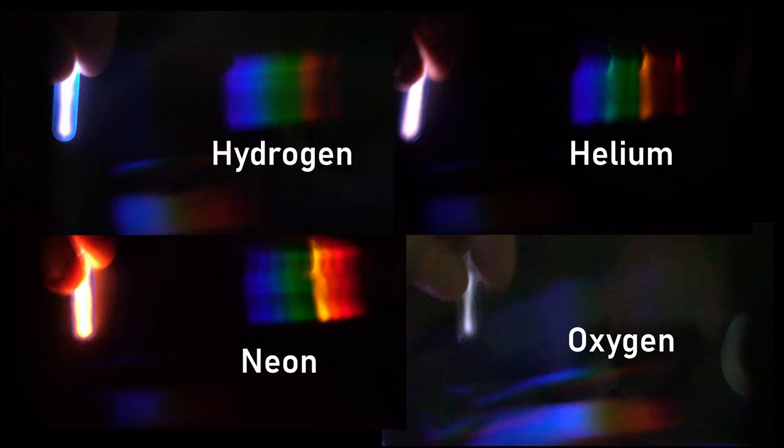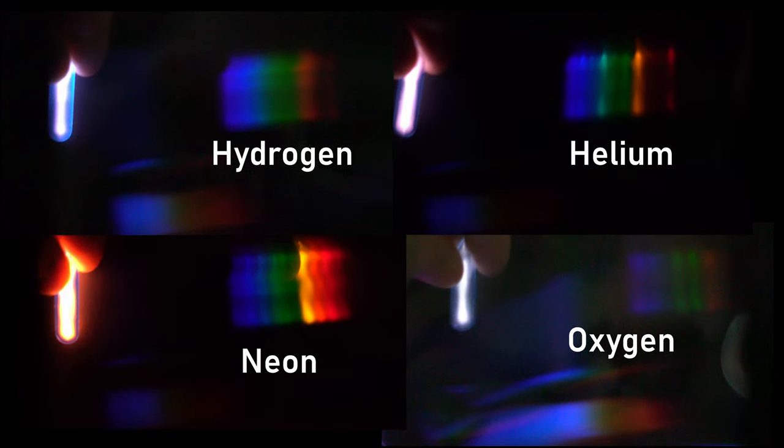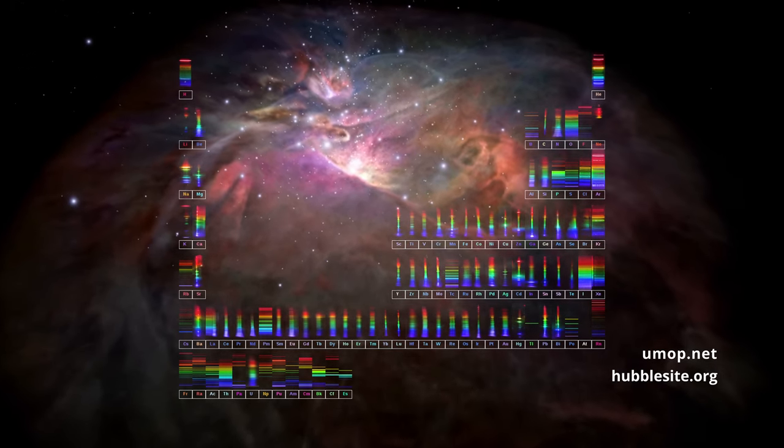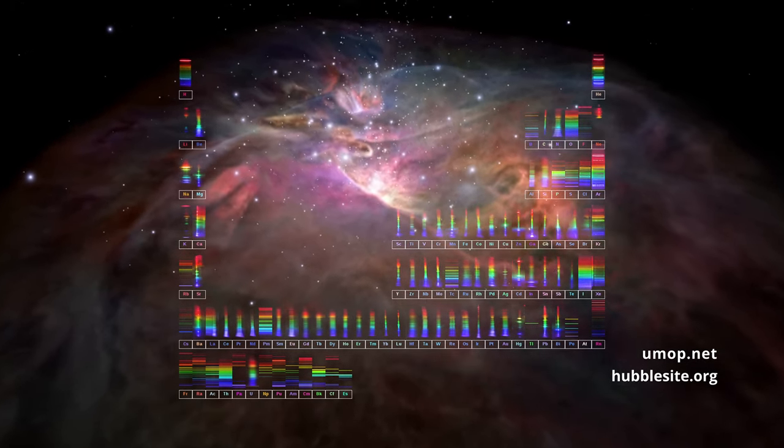In fact, under certain conditions, each element will give off their own unique spectrum of light, allowing scientists to analyze the makeup of stars and planets trillions of miles away.